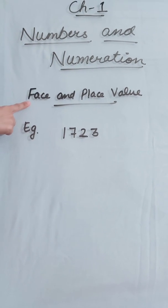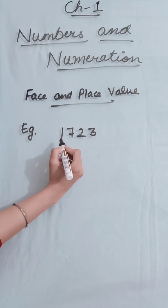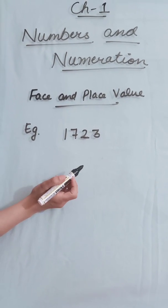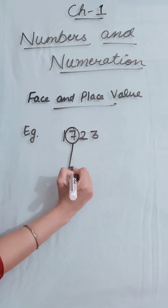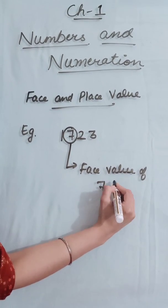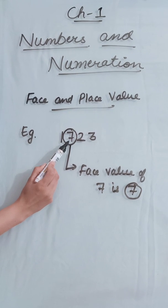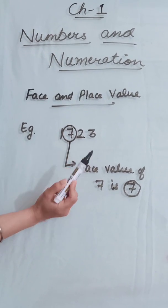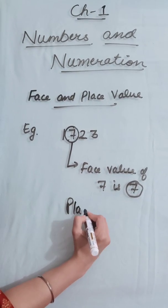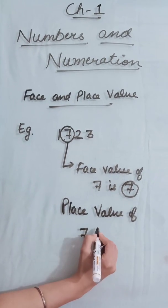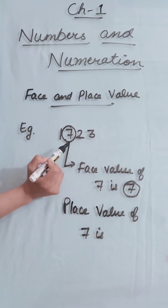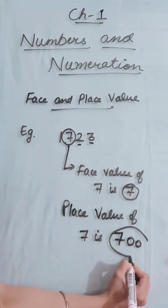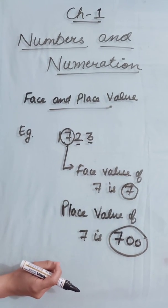Now we talk about face value and place value of a digit. For example, take the number 1723. The face value of a digit is always the digit itself — it does not depend upon the place. So the face value of 7 is 7, face value of 2 is 2, face value of 3 is 3. For the place value of 7, we count the digits after it — there are two digits after 7, so the place value of 7 is 700.